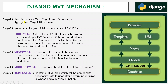Now let's come to the explanation of files. Step one: the user requests a web page from a browser by typing the web page URL address. Step two: Django checks the given URL address in its urls.py file. After receiving the browser request, Django checks the browser-provided web page address in the urls.py file.